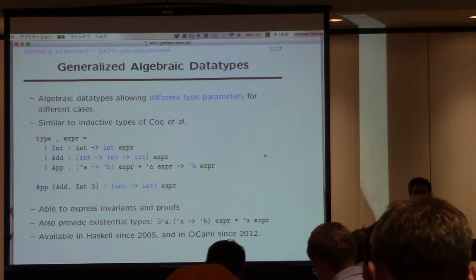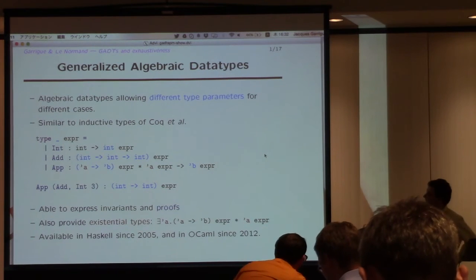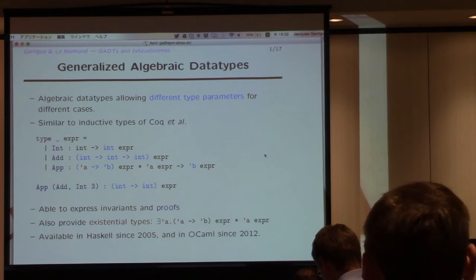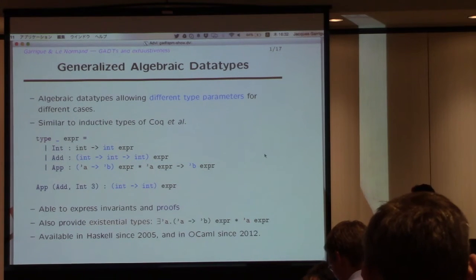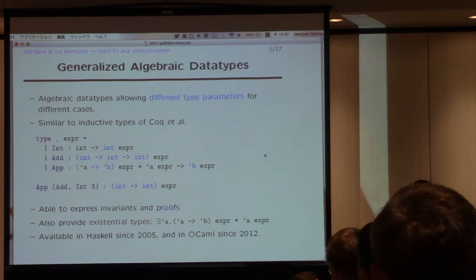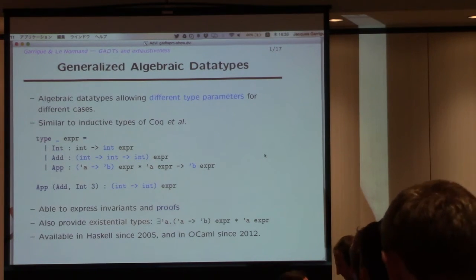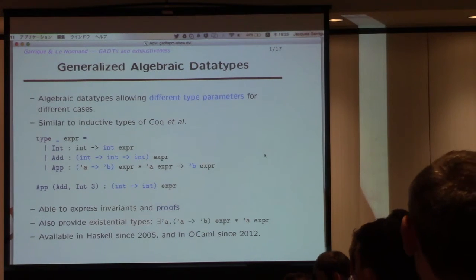So, the GADTs, I don't think I have much to say about it. Everybody in this room knows about GADTs? Well, the basic idea is just algebraic data types with different type parameters, so you see the difference here. We use almost the same notation as in Haskell. It should not be hard to follow for people from that background.